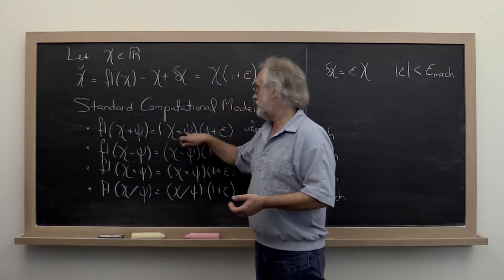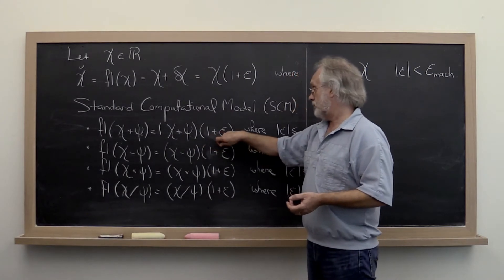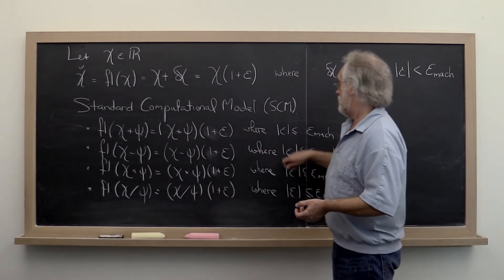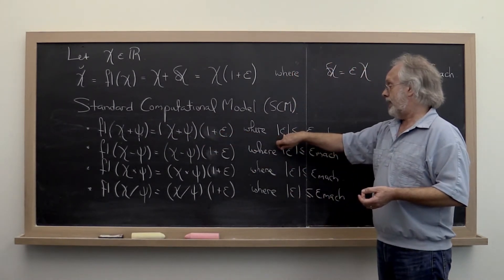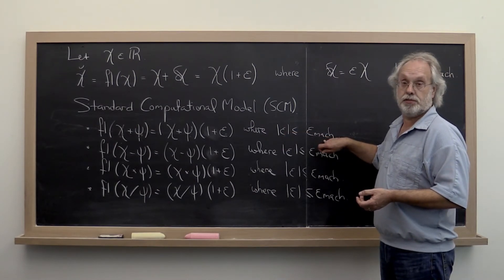And that then incurs an error, namely epsilon, where the absolute value of epsilon is bounded by the machine epsilon.